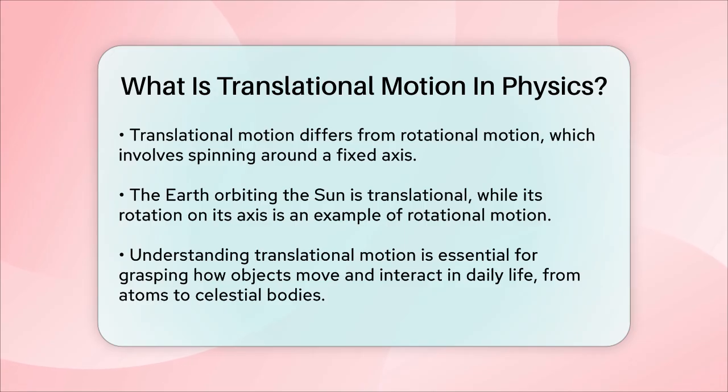So to sum it up, translational motion is about objects moving in a straight line or a curved path without changing their orientation. And it's a fundamental concept in physics that helps us understand the world around us.